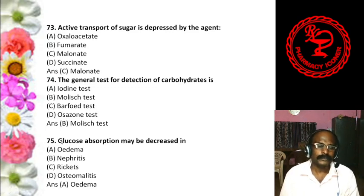Question 29: In glucose, the orientation of hydrogen and hydroxyl around carbon atom 5, adjacent to the terminal primary carbon, determines — A. D or L series, B. Dextro-levo series, C. Dextrorotatory, D. Alpha and beta anomers, E. Epimers. The answer is A, D and L series.